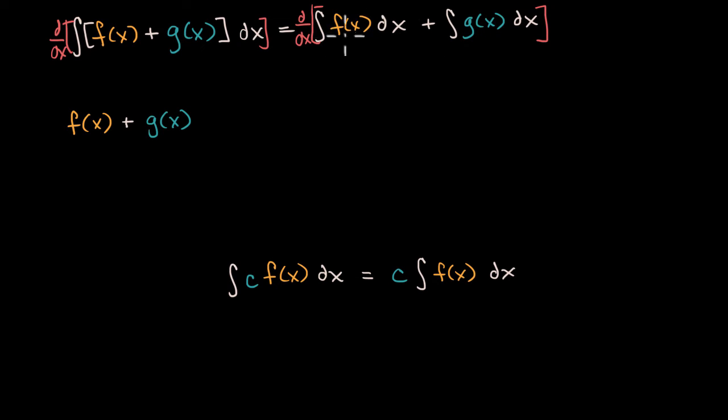Now what would this become? Well, we could just go to our derivative properties. The derivative of the sum of two things is just the same thing as the sum of the derivatives.